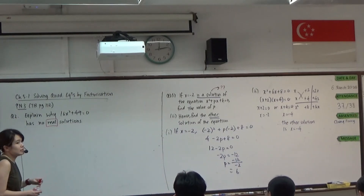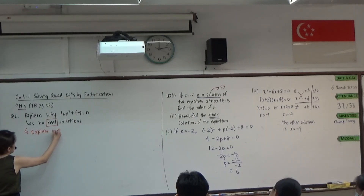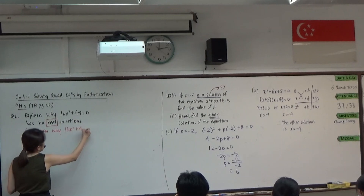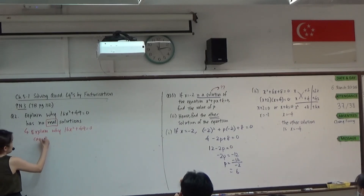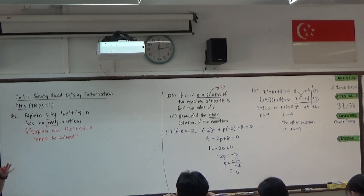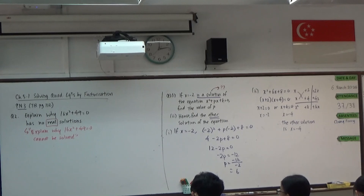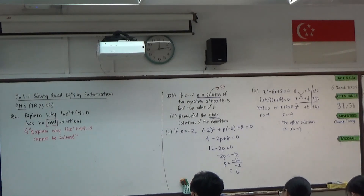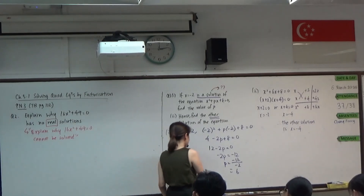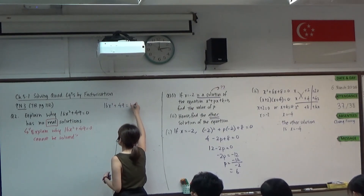We are looking to explain why this equation over here doesn't allow us to get answers. Essentially, it is also saying: explain why this equation cannot be solved at our current level of thinking. The question is already telling you it cannot be solved — we just need to figure out why. In case you are still thinking it can be solved, we need to look at how we solve quadratic equations. Any quadratic equation must be factorized. Can we factorize 16x² plus 49?